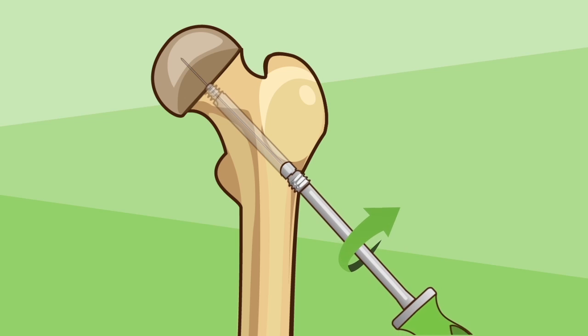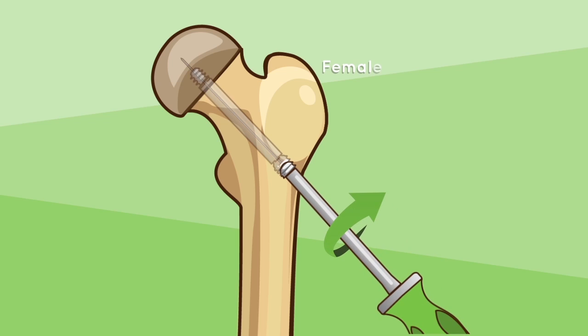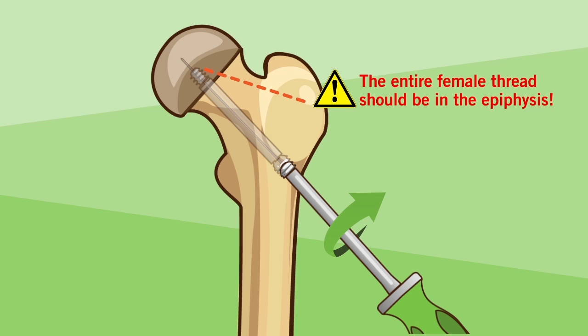This action simultaneously engages the thread of the female into the epiphysis of the femoral head and the thread of the male into the lateral cortex. Take care not to let the male distract from the female during insertion. To assure continued normal growth, the entire threaded portion of the female component must be past the growth plate and within the epiphysis in both the AP and lateral views.